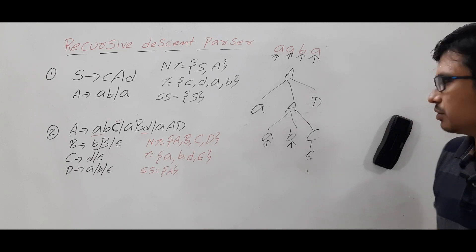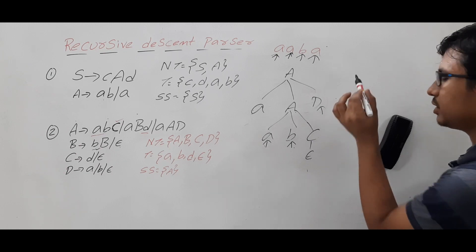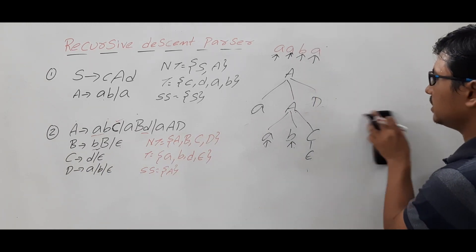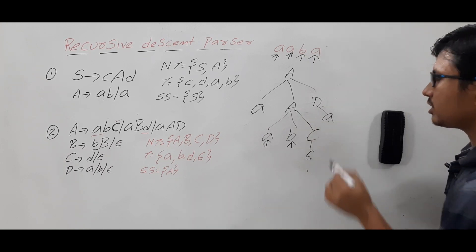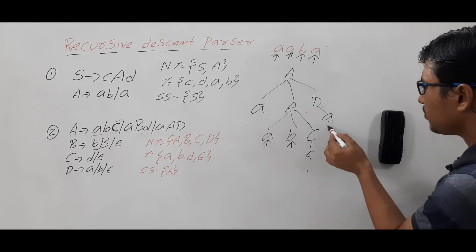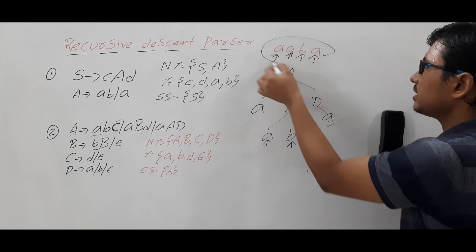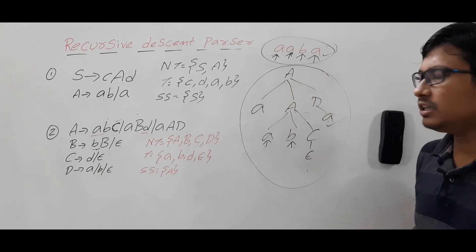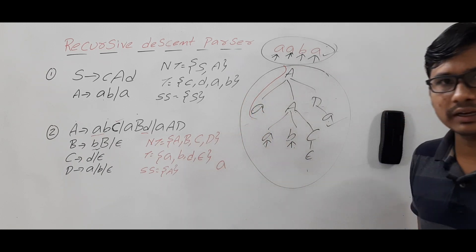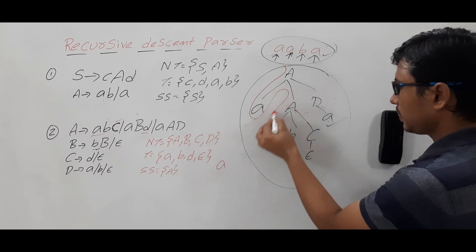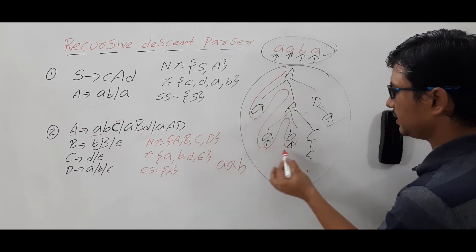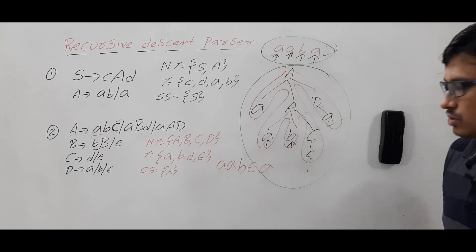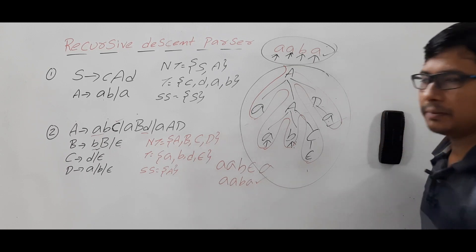With C → epsilon, the descent pointer moves to D (a non-terminal). It takes the first production: D → a. The descent pointer is pointing to 'a' and input pointer is pointing to 'a' — there is a match, and the string is completed. So this grammar has generated the string using the recursive descent parser. To yield the parse tree from the start symbol: you get terminal a, terminal a, terminal b, epsilon (ignored), terminal a — which gives 'aaba'.